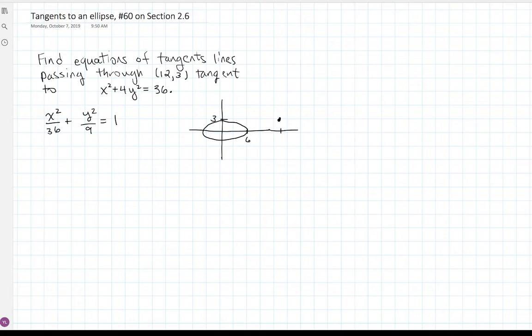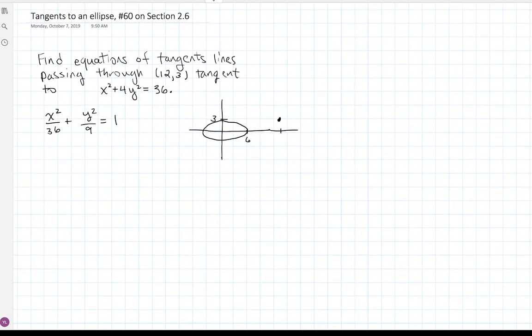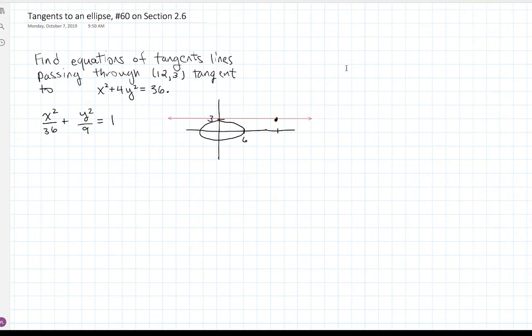And again, as discussed in class, we can already see one tangent line pretty clearly, which is the line y equals 3. So we basically already have one of our answers, but the other tangent line is going to be a little bit more difficult to figure out. So let me try and get a rough sketch of what that would look like. Let's pretend it passes through that point and is tangent to the ellipse.